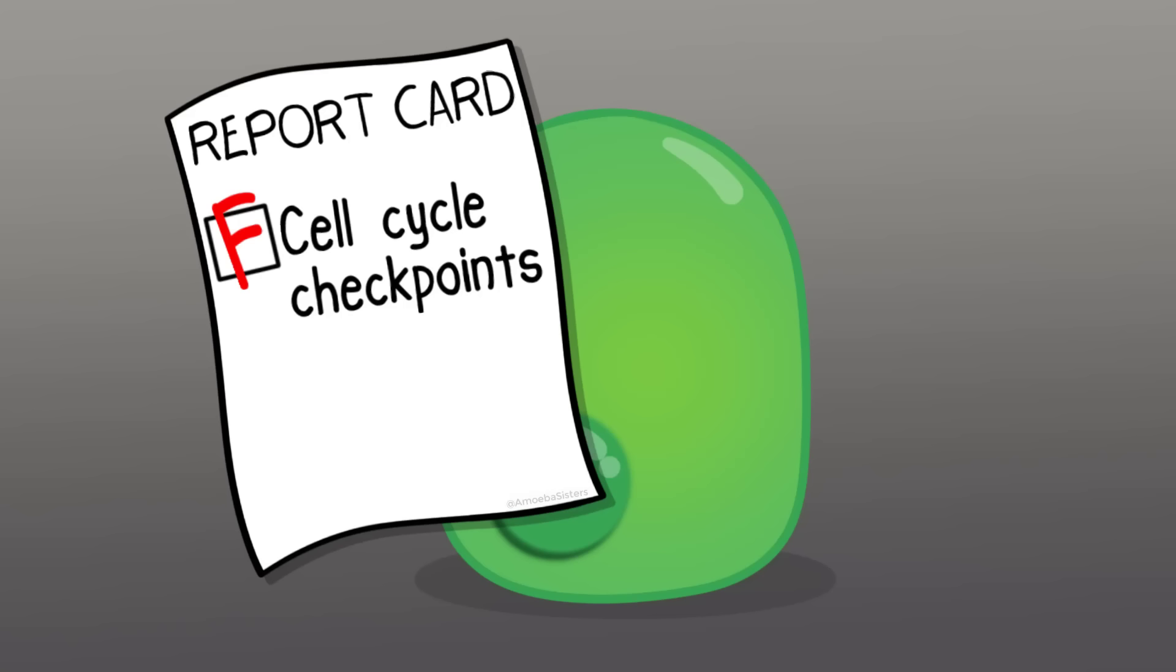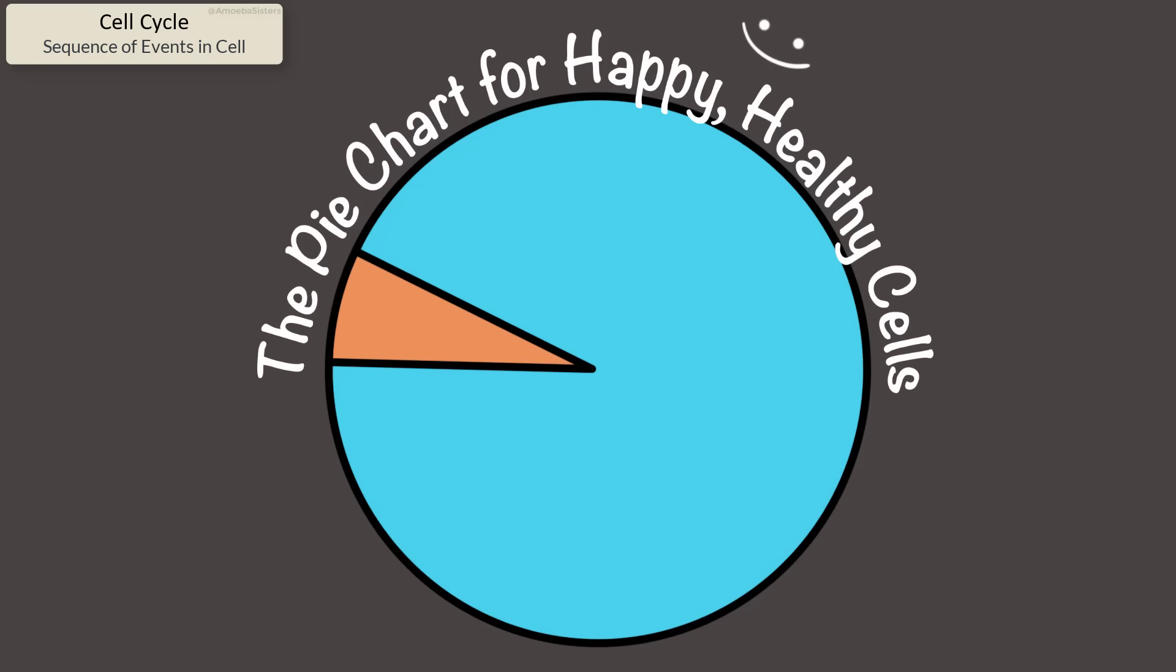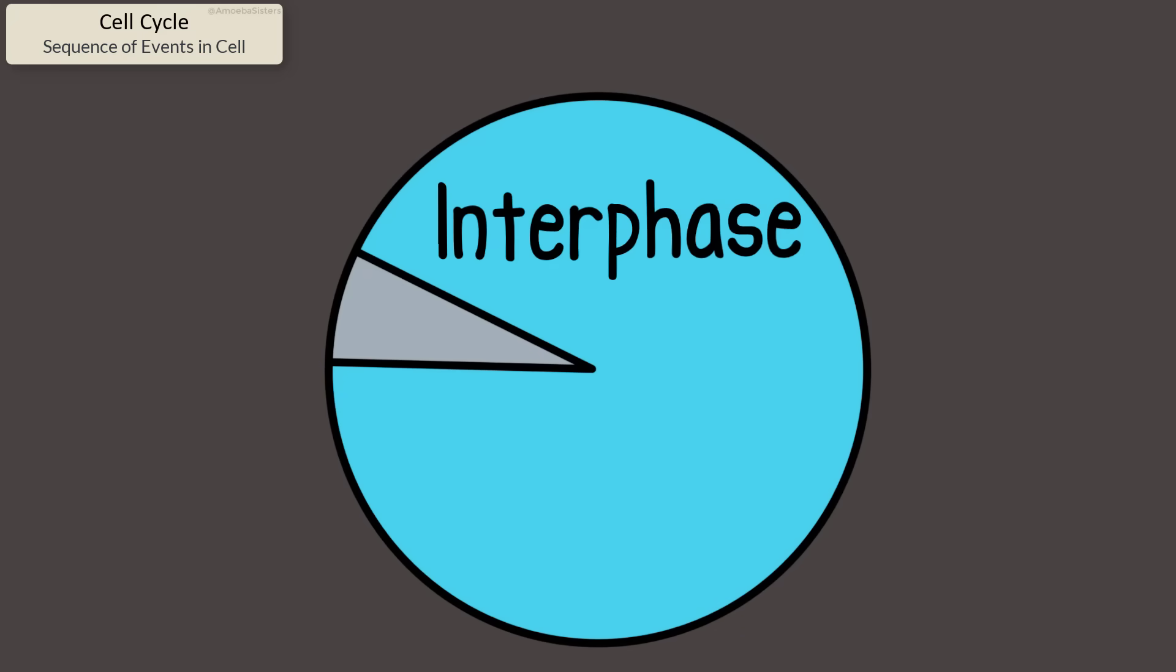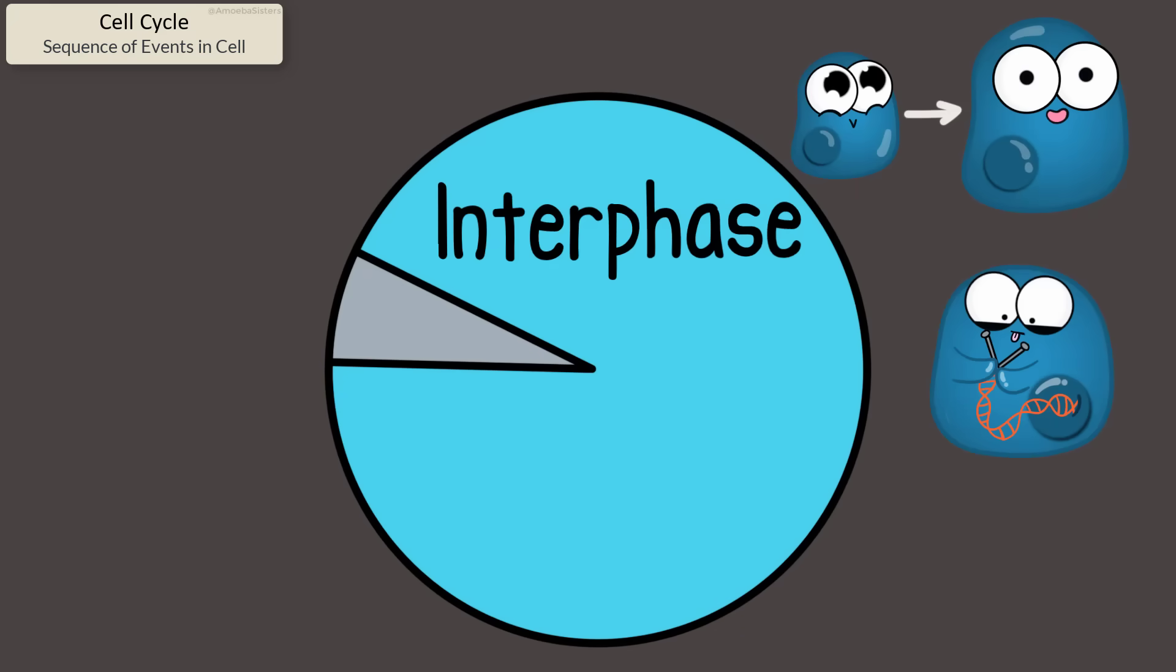So what is the cell cycle? The cell cycle is often represented as a pie chart like this. Cells are either in one of two different phases: a phase called interphase where the cells themselves are growing, replicating their DNA, doing their cell functions.